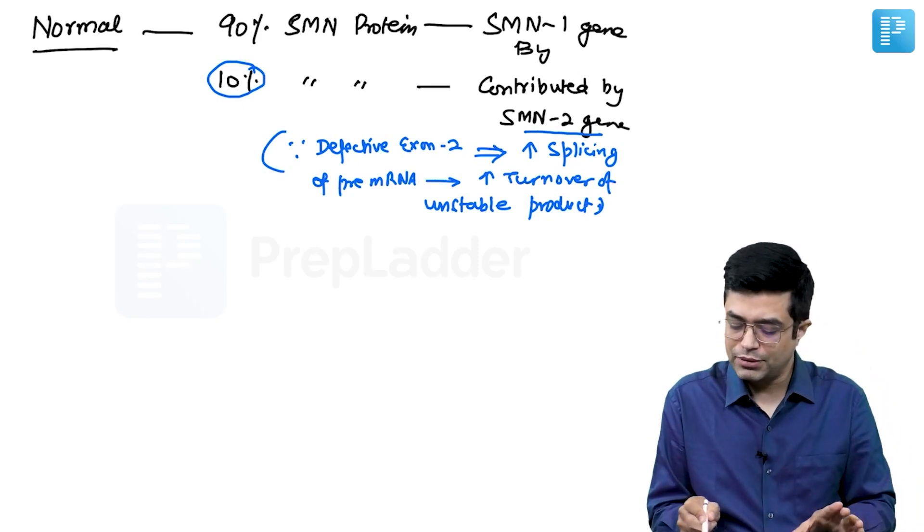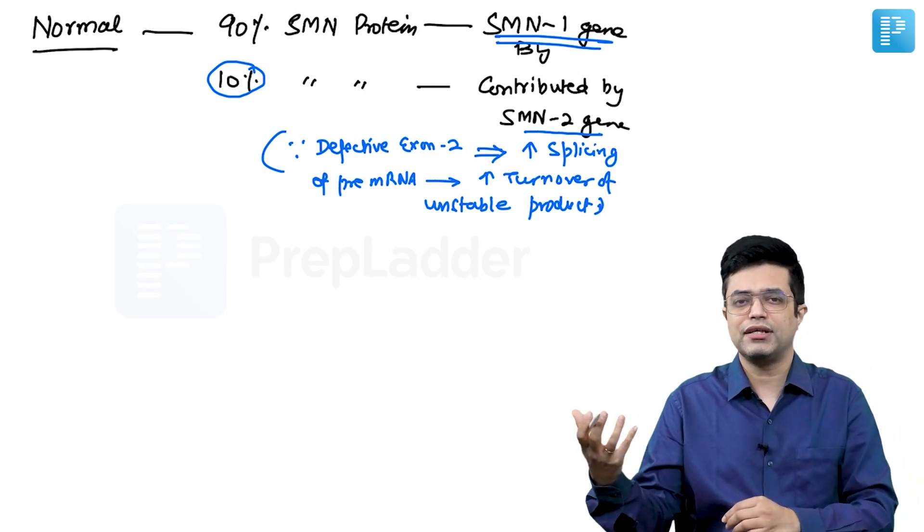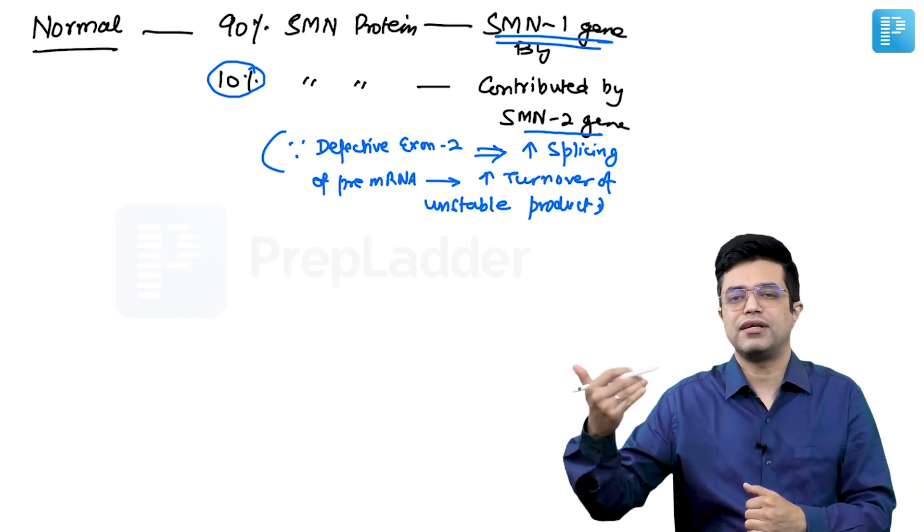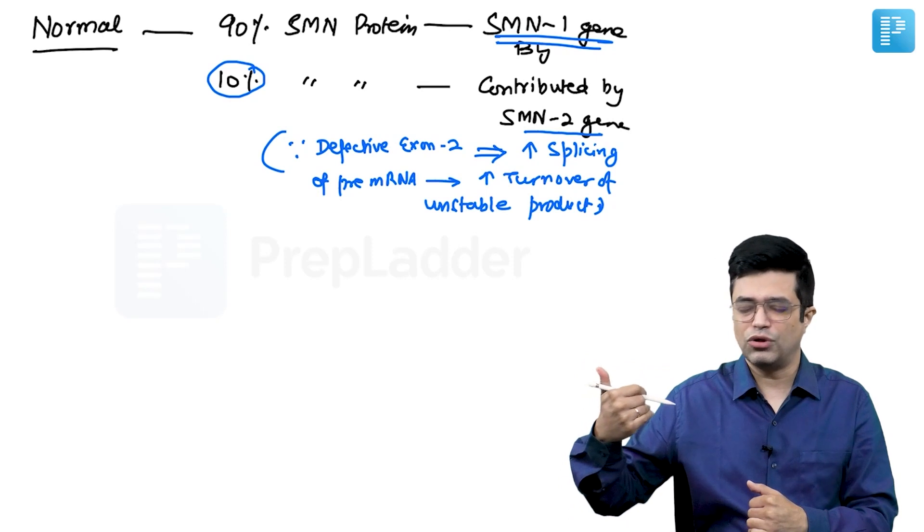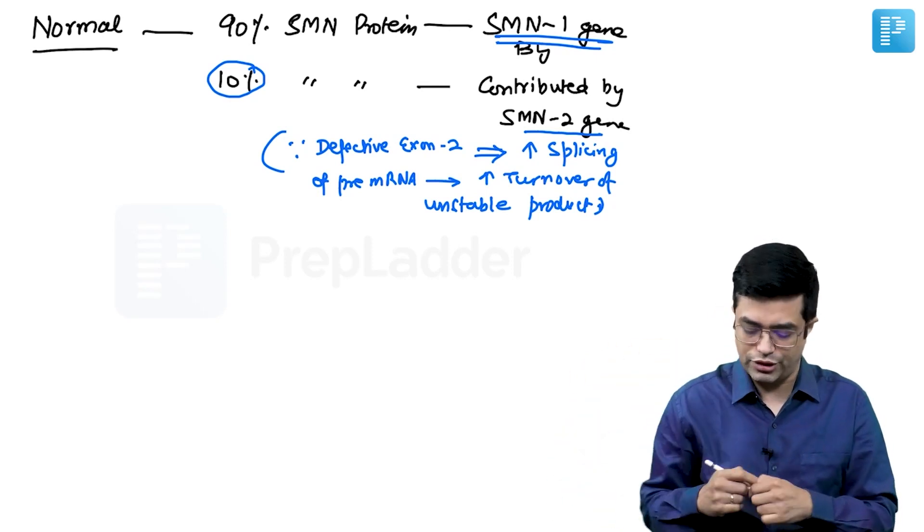For all practical purpose, SMN1 gene is called the functional gene. SMN2 gene is a sister gene which remains relatively non-functional. It is not completely silent, relatively non-functional.